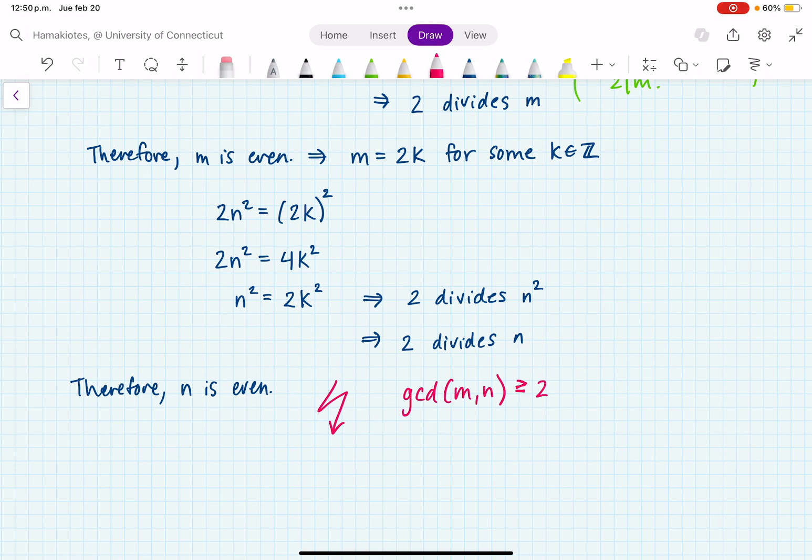Therefore, if we keep repeating this, we'll keep getting this sort of divisibility constraint. And so this tells me that the fraction m over n must not have been in lowest terms. So this is a contradiction.